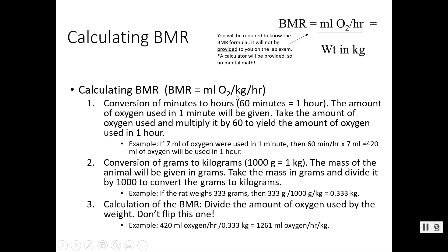We need to convert units as needed. You may be given minutes, so convert to hours: for example, 7 milliliters of oxygen per minute times 60 minutes per hour gives 420 milliliters of oxygen per hour. We also need weight in kilograms. If a rat weighs 333 grams, move the decimal three places to get 0.333 kilograms.